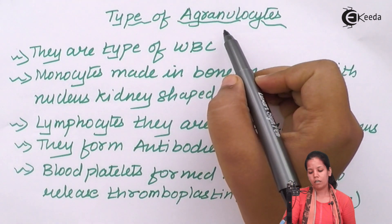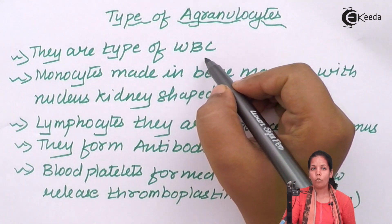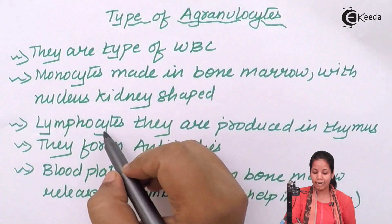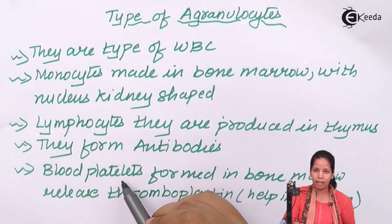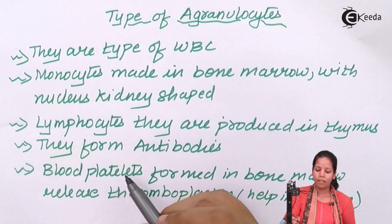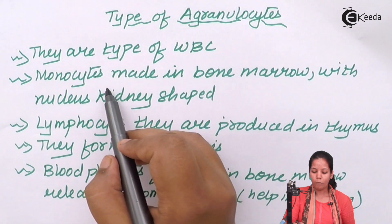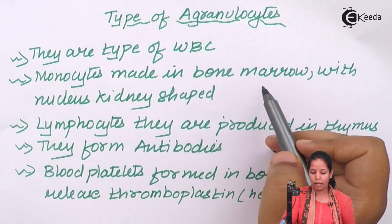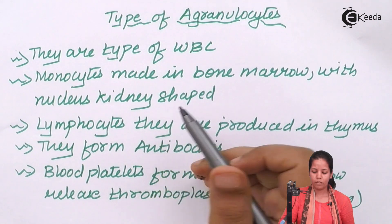Types of agranulocytes — they are a type of WBC or white blood cells. The first kind is monocytes, the second kind is lymphocytes, and the third kind is blood platelets. Monocytes are made in the region of bone marrow and have a nucleus that is kidney-shaped.